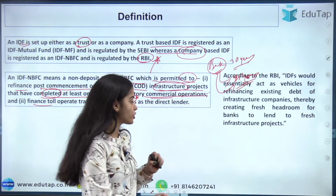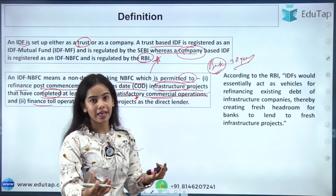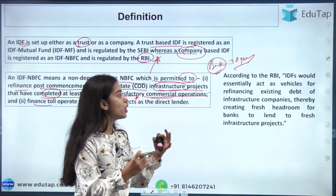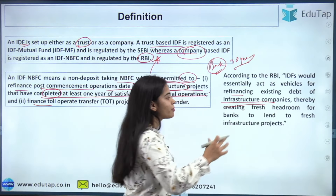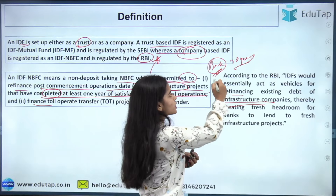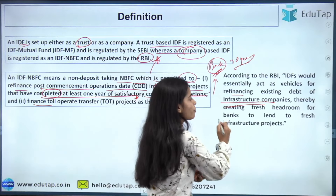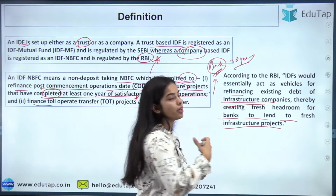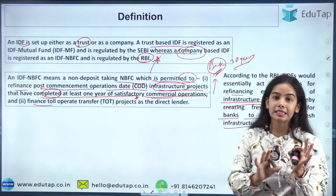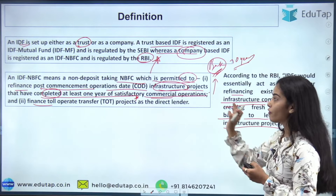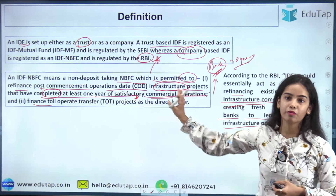According to RBI, IDF NBFCs would essentially act as a vehicle for refinancing the existing debt of infrastructure companies, thereby creating fresh headroom for banks to lend to fresh infrastructure projects. So IDF NBFCs can only use money for refinancing post-commencement-of-operation-date infrastructure projects that have completed at least one year of operation.